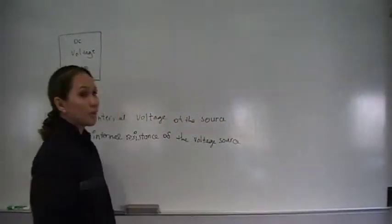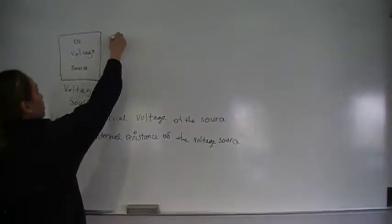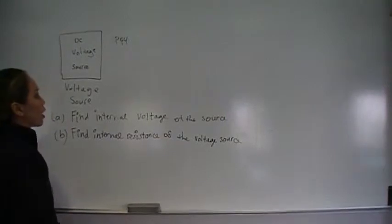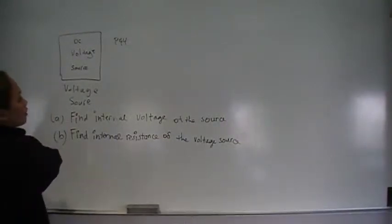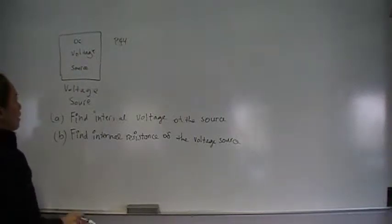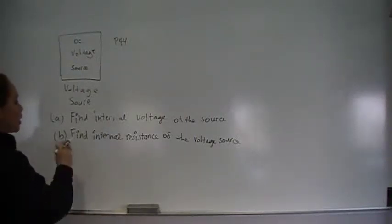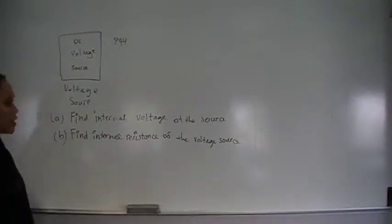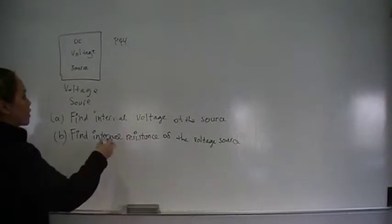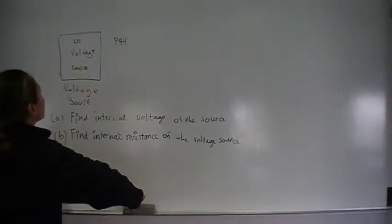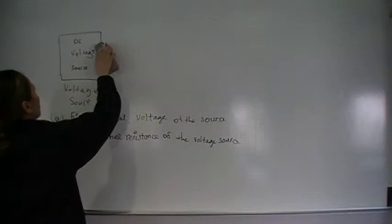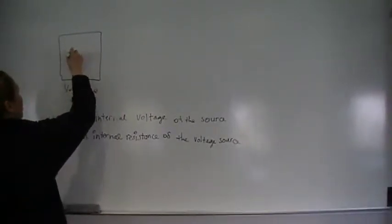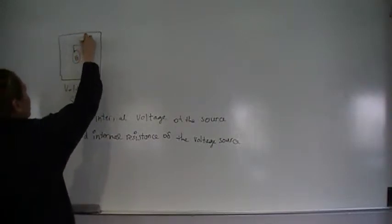This is problem number 44, P44 of chapter 3. In this problem, we're given a DC voltage source, and we're asked to find the internal voltage and the internal resistance of the voltage source. So we're looking for VS and RS. The voltage source itself has some internal voltage modeled in series with its own internal resistance.